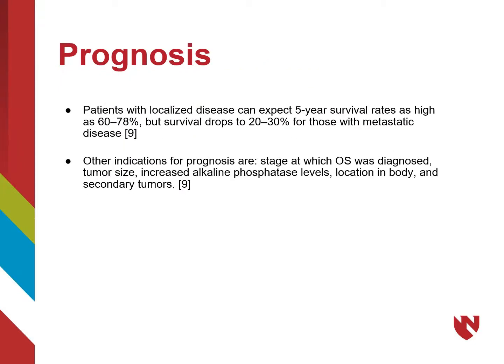Patients with localized disease can expect a five-year survival rate as high as 60 to 78 percent, but this drops drastically to 20 to 30 percent for those with metastatic disease. Other indicators for prognosis include the stage at which osteosarcoma was diagnosed, tumor size, increased alkaline phosphatase levels, where it occurs in the body, and secondary tumors.